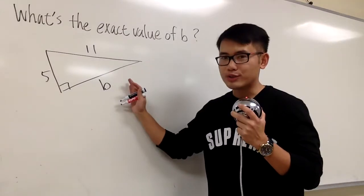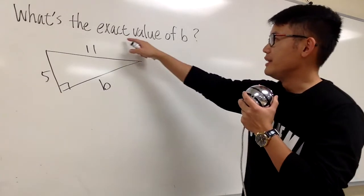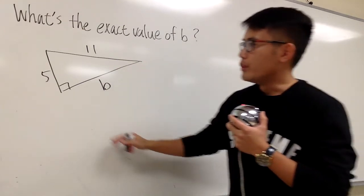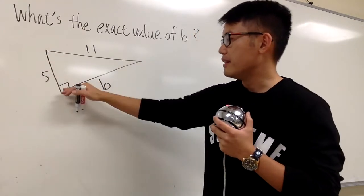In this question, we are given a right triangle, and then we are going to find out the exact value of b, which is this side right here. We have a right triangle, 5, and this is b.